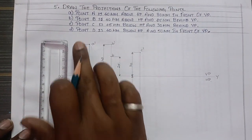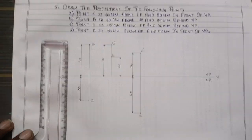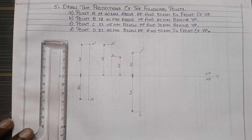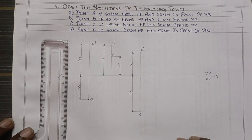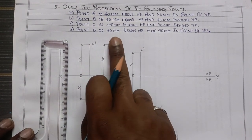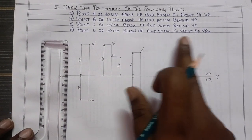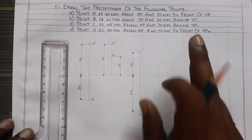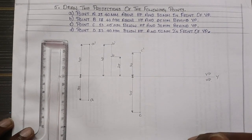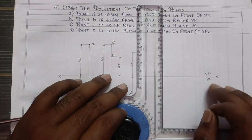Next, point D: 40mm below the HP and 50mm in front of VP.